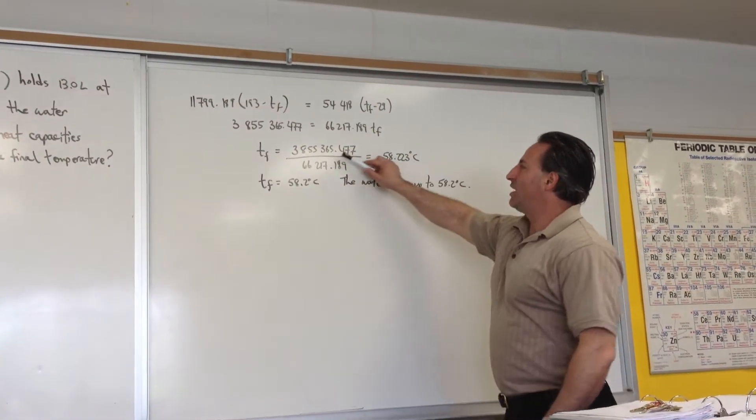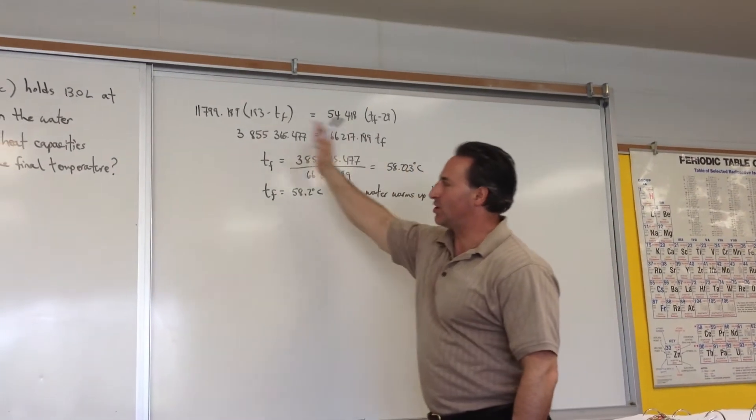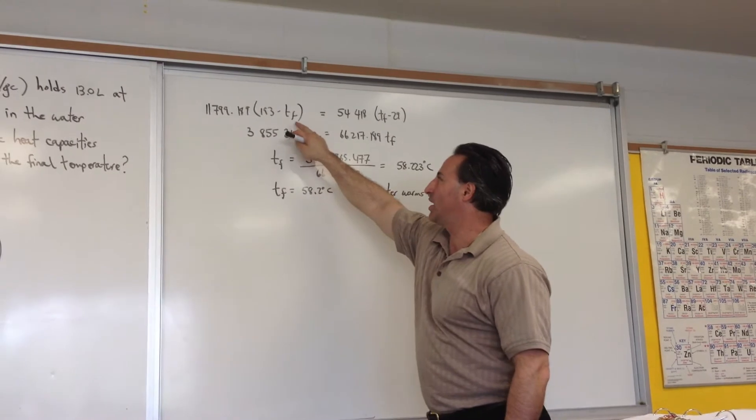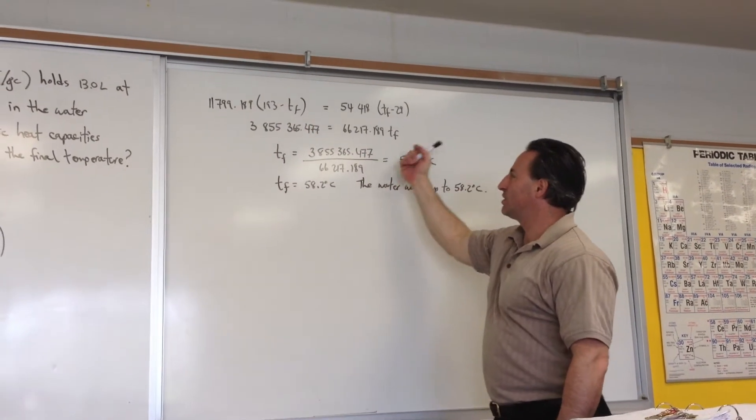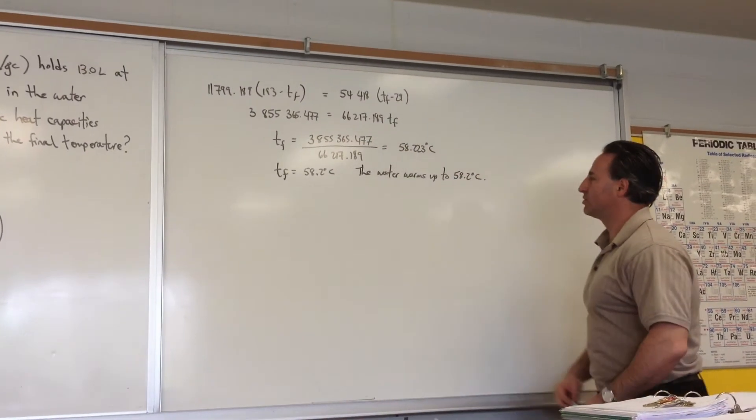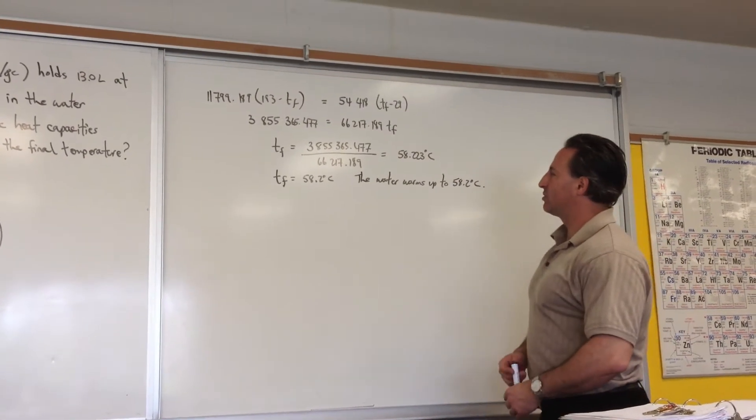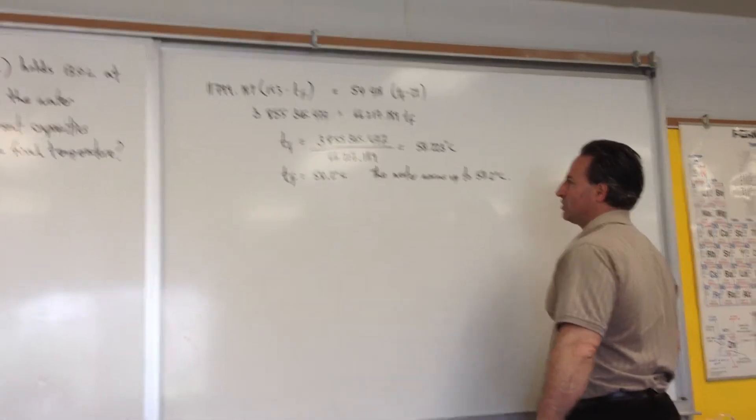We do the algebra. We've transposed all the variables containing Tf on one side, distributed the numbers into the brackets. Everything with Tf was on one side, all the numbers on the other side. We solve for Tf and we get 58.223. So the final temperature of the water, to three significant figures, is going to be 58.2 degrees Celsius.